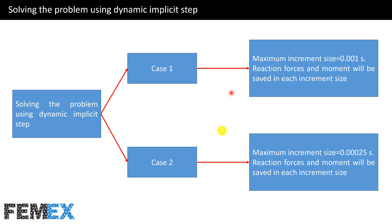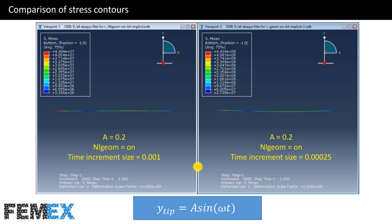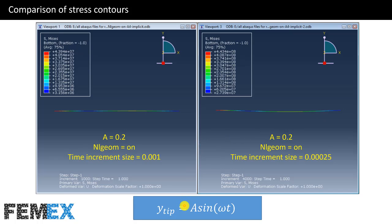In both cases, the reaction forces and moment will be saved in each increment. Here we have the von Mises stress contours in both cases at the end of the analysis. In both cases, a displacement control loading has been applied to the tip of the beams, and here is its equation.